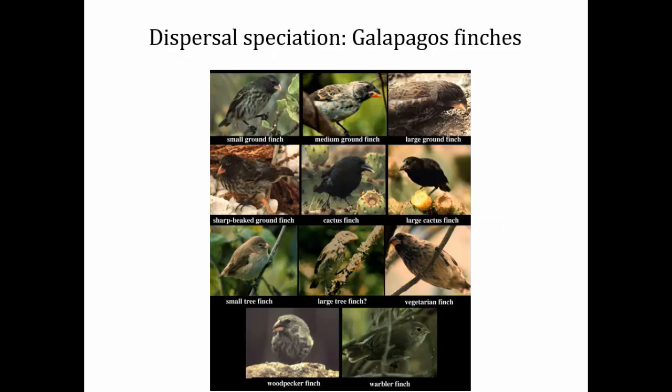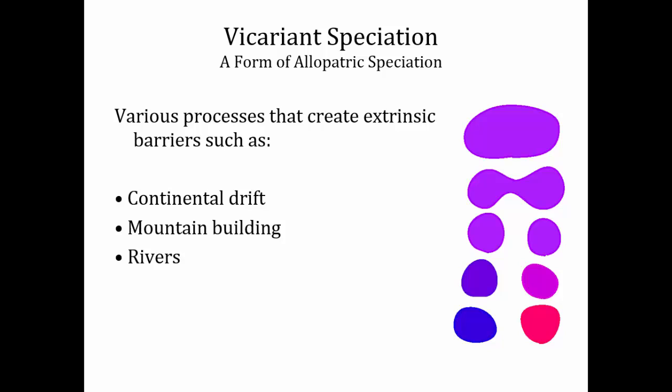It's thought that dispersal speciation was the reason why we have so many different species of Galapagos finches — they speciated on an island archipelago that's very isolated from the mainland. Vicariant speciation is a form of allopatric speciation where the landscape or geography of a species changes around it. This can happen because of continental drift, mountain building, rivers changing course, etc. Although people think this never happens, it turns out it's probably a very important force in the creation of new species — it just happens on a very slow timescale.